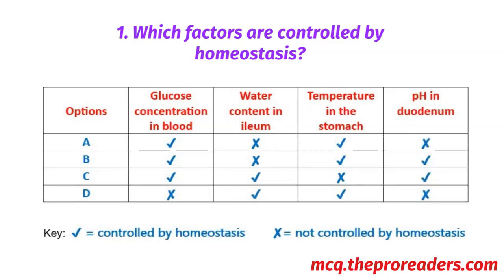Options: glucose concentration in blood, water content in ileum, temperature in the stomach, pH in duodenum. Note that the check sign represents that it is controlled by homeostasis and the cross sign represents that it is not controlled by homeostasis.